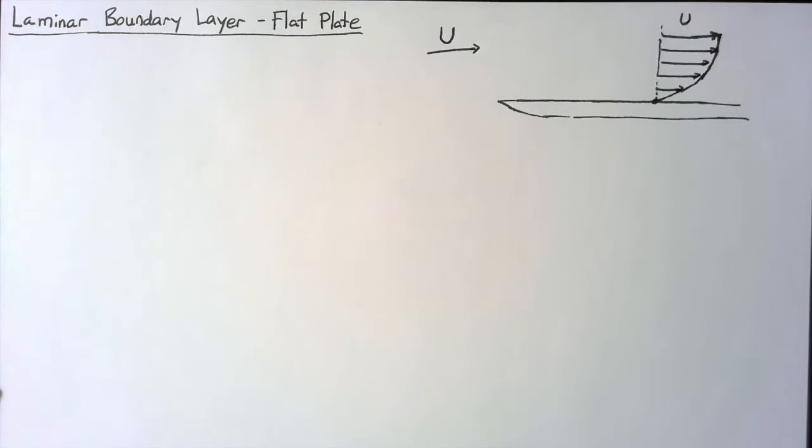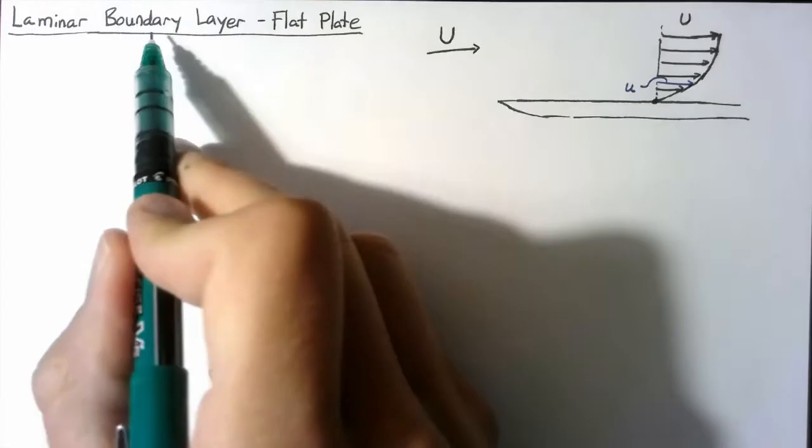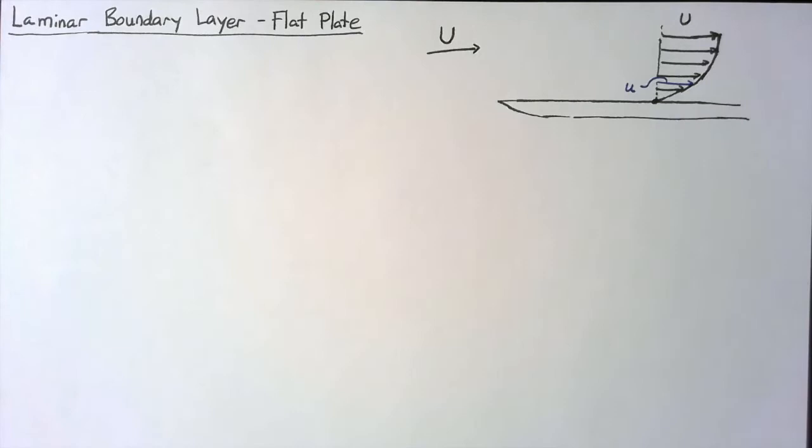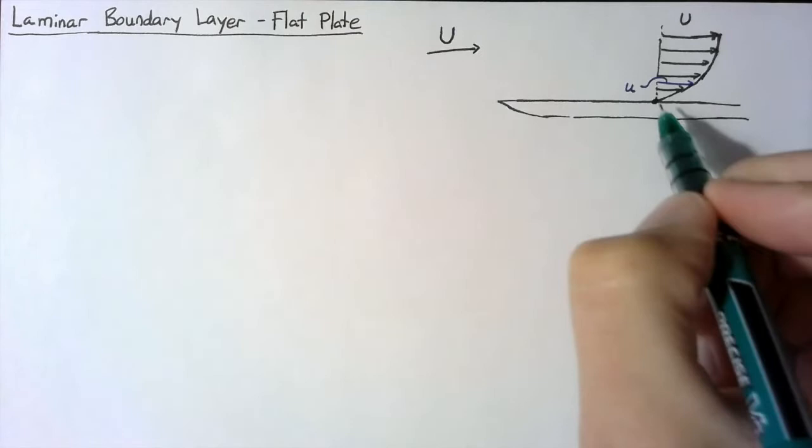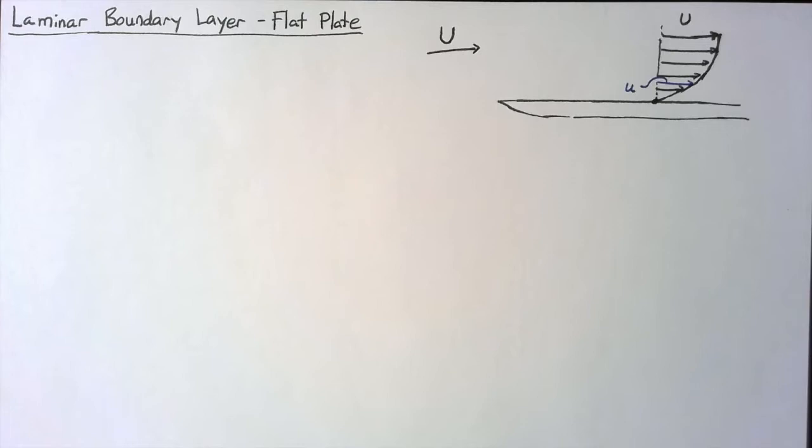This local velocity we usually refer to as a lowercase u. This flow deficit that we have is the boundary layer on top of our flat plate. The boundary layer is a very complex flow field — at each x location, this exact velocity profile is changing. So we've developed some tools, some measurement systems that help us get a feel for what the boundary layer actually looks like.